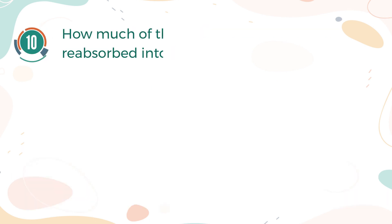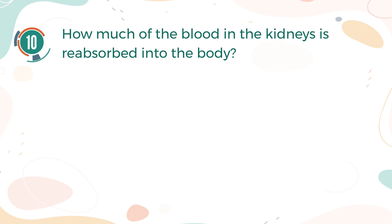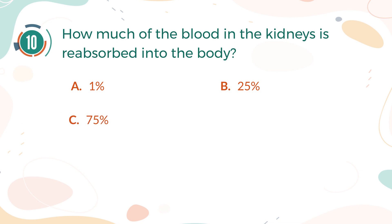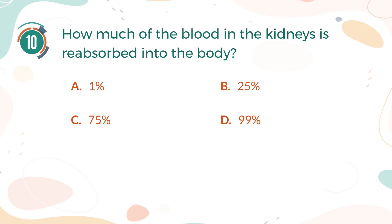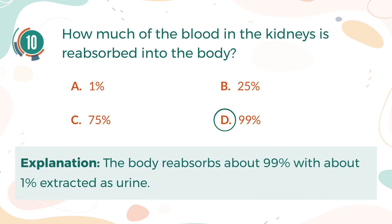Number 10. How much of the blood in the kidneys is reabsorbed into the body? A. 1%. B. 25%. C. 75%. D. 99%. The correct answer is D. 99%. Explanation: The body reabsorbs about 99% with about 1% extracted as urine.